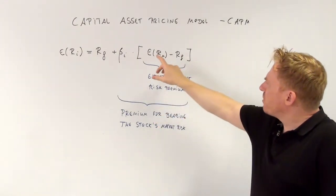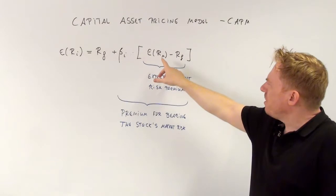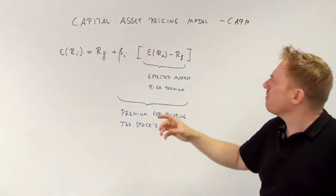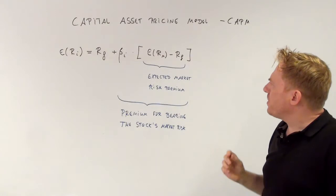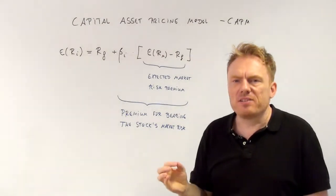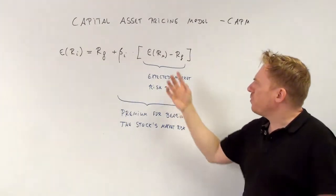The expected value of the market return minus the return of the risk-free asset gives us the expected market risk premium.